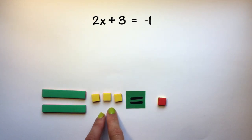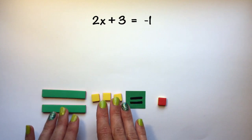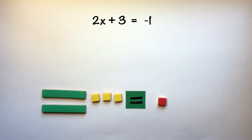The first thing we need to do is to remove any integers from this side of the equation. We want only variables, no constants. So we have positive 3 here that we're going to need to remove from this side before we can do anything else.